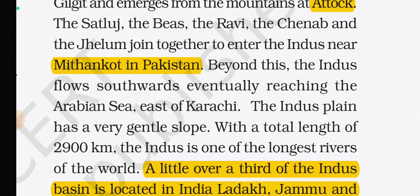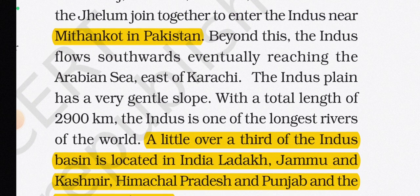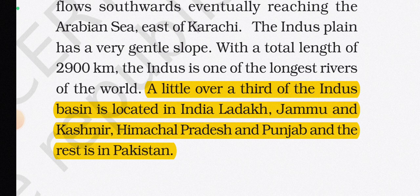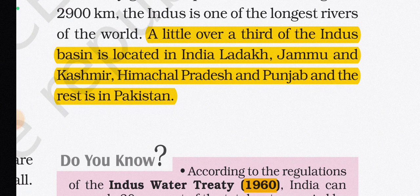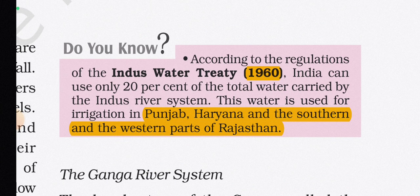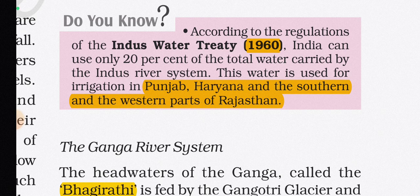Beyond Mithankot, the Indus flows southwards, eventually reaching the Arabian Sea east of Karachi. With a total length of 2900 km, the Indus is one of the longest rivers in the world. A little over one-third of the Indus basin lies in India — in Ladakh, Jammu & Kashmir, Himachal Pradesh, and Punjab — and the rest in Pakistan. Under the Indus Water Treaty of 1960, India can use only 20% of the total water, used for irrigation in Punjab, Haryana, and parts of Rajasthan.